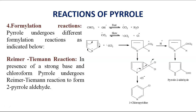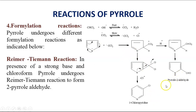Pyrrole also undergoes formylation reaction. The best example is the Reimer-Tiemann reaction. This occurs in presence of a strong base and chloroform, and Pyrrole undergoes this reaction at the second position to form 2-pyrrolecarboxaldehyde. The chloroform dissociates to give CCl3 minus ions, which further dissociate to give CCl2 and chloride ions. This CCl2 attacks on the Pyrrole ring to give two products: 2-pyrrolealdehyde and a ring expansion product where the 5-membered ring is converted to a 6-membered ring, called 3-chloropyridine.